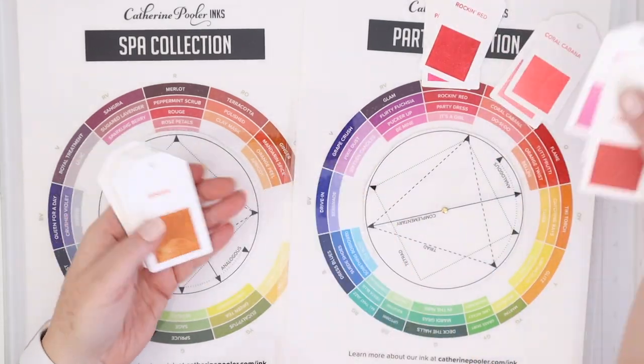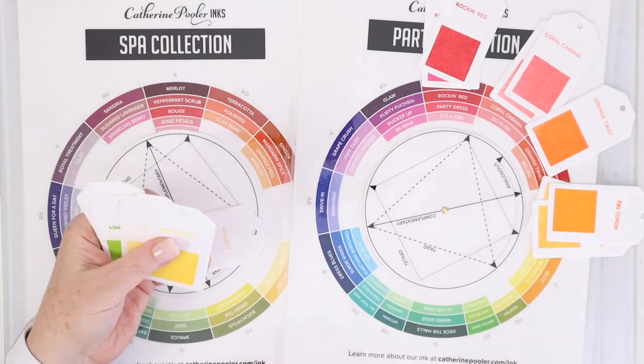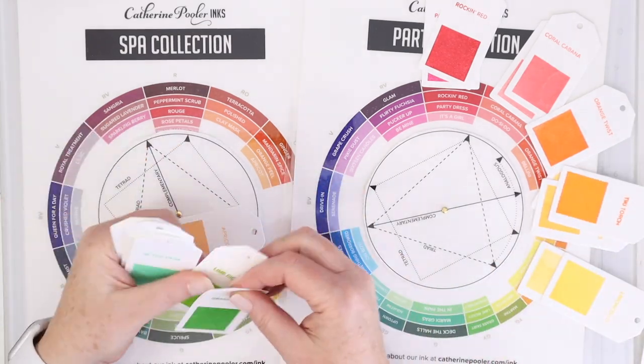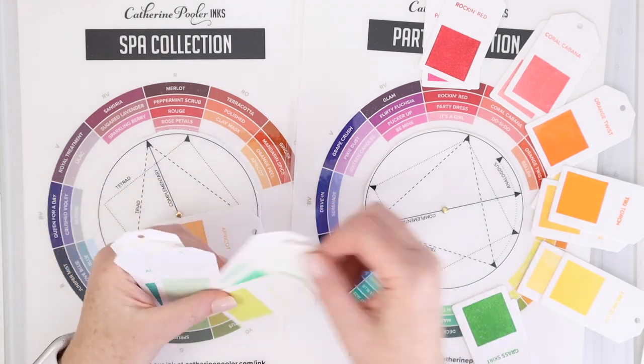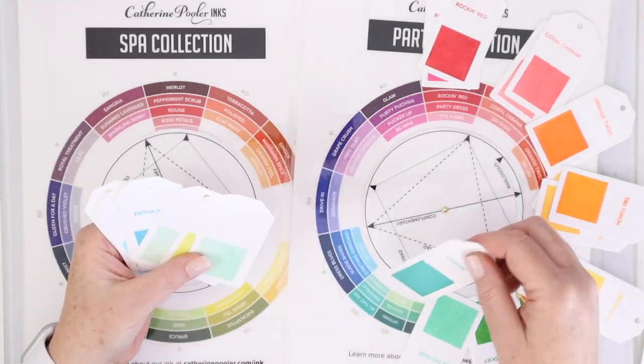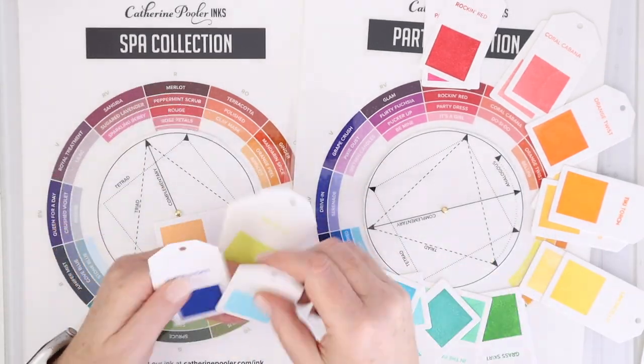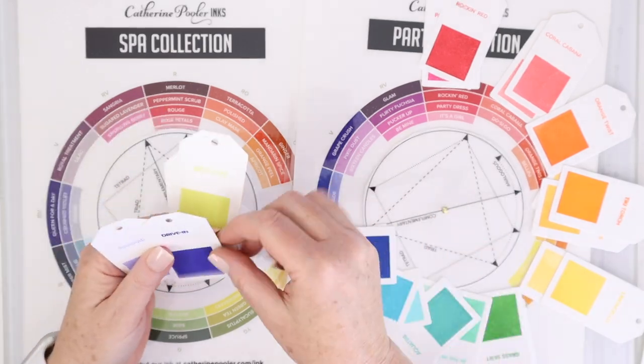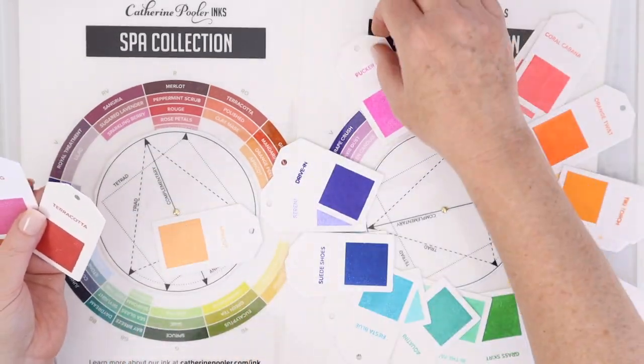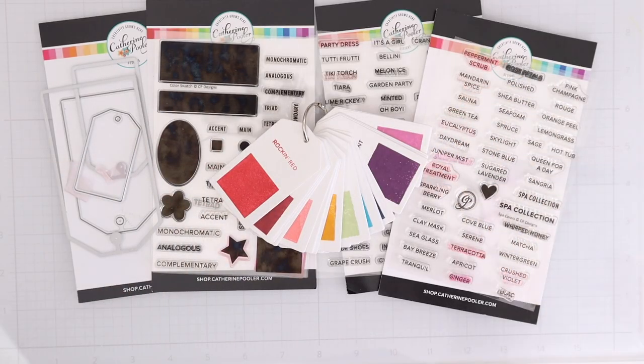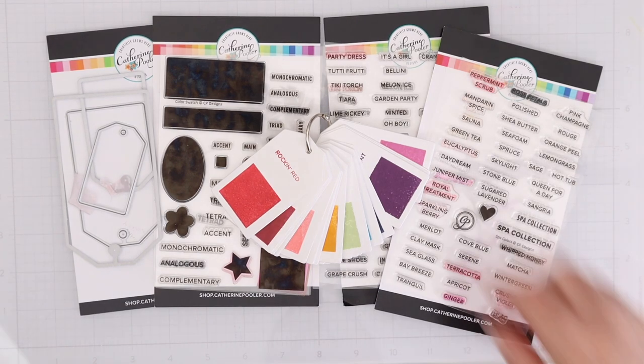Once I had all my colors swatched out, I did put them in ROYGBIV order, but I wanted to make sure they were in the order of the color wheel itself. So you can see that I'm stacking them up on top of each of the sections of the party collection color wheel so that I can make sure I have them in the right order. And then once I did that I did place them on a binder ring.